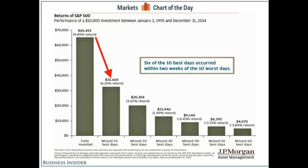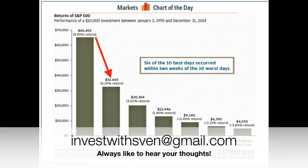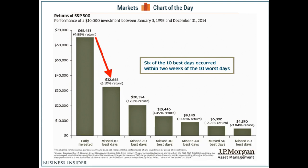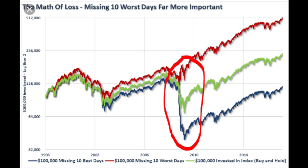I recently received an email from a viewer asking whether we can time the market. The answer is: I think we can't, because if you miss the five best days, your returns over the long term are halved. Of course, if you also miss the 10 worst days, your returns skyrocket — but if you miss the five worst days, you're probably going to miss the best days too. The best and worst days all happened in very short periods, like October 2008-2009, with crazy up and down days back to back. So I advise against market timing and exiting with your full portfolio.